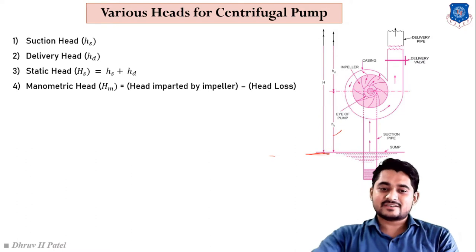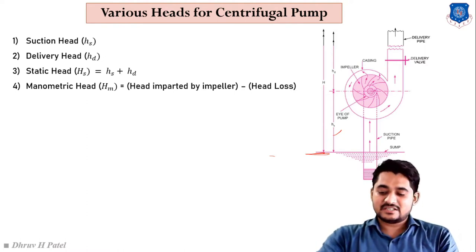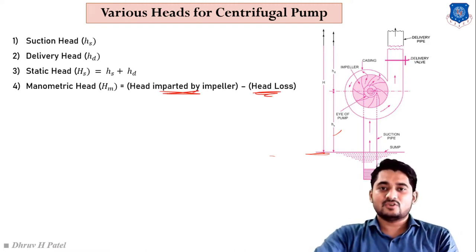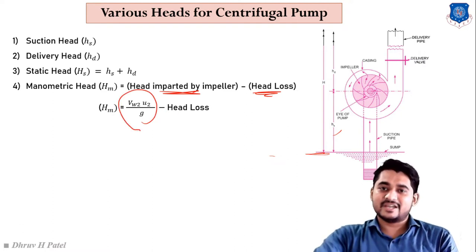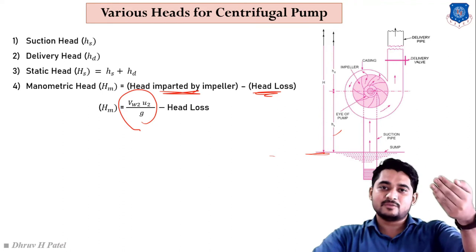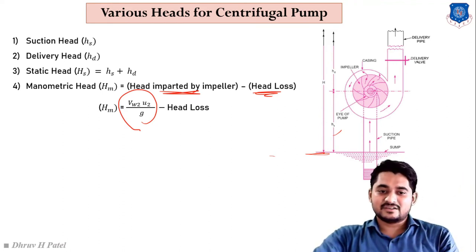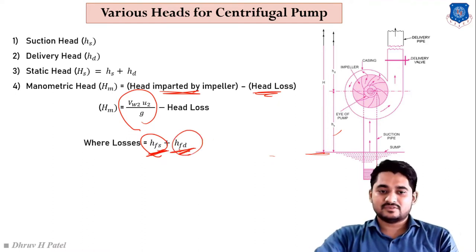Manometric head means the head imparted by the impeller in the ideal condition minus various types of losses. We can call manometric head the actual head delivered by the centrifugal pump. From our derivation, the head imparted by the impeller is V_w2 * u2 / g minus various types of head losses, which include friction losses in the suction pipe, delivery pipe, and impeller — represented as h_fs and h_fd.